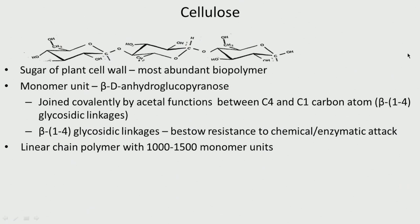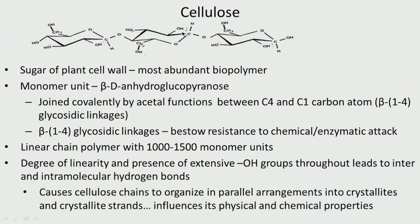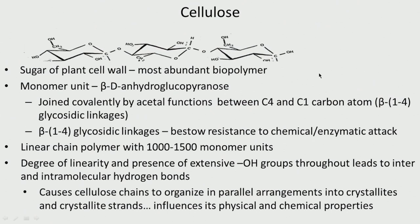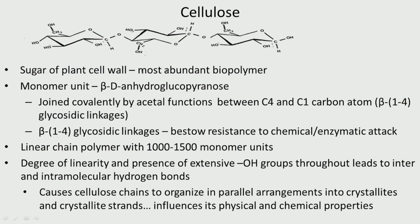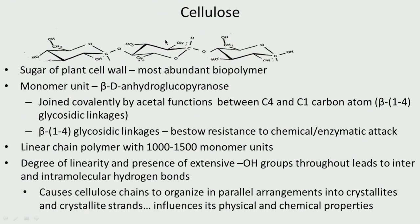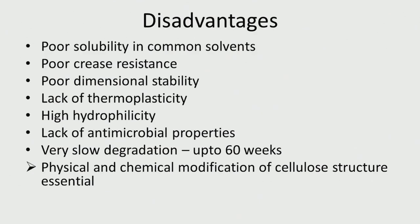The degree of linearity and the presence of extensive OH groups leads to inter- and intramolecular hydrogen bonds, so it ends up being crystalline in a parallel arrangement. This influences its physical and chemical properties. It is widely found, crystalline in nature with many OH groups that form very good hydrogen bonds. So it has poor solubility in common solvents, poor crease resistance, poor dimensional stability, lack of thermoplasticity, high hydrophilicity, and it does not have antimicrobial properties. Degradation is also very slow — up to 60 weeks.